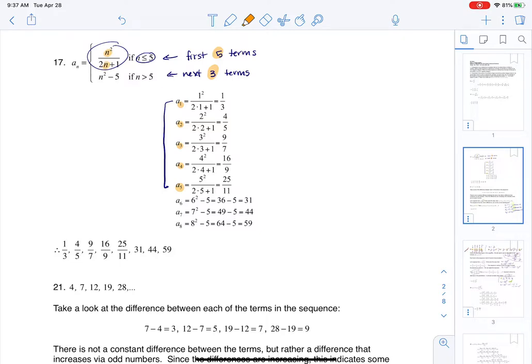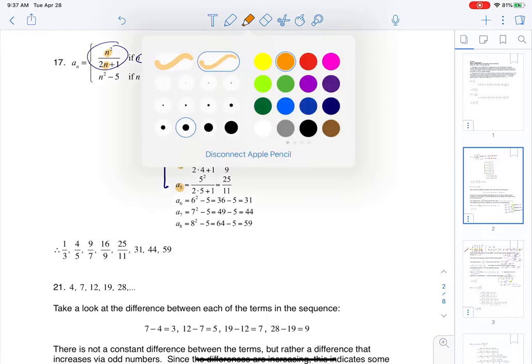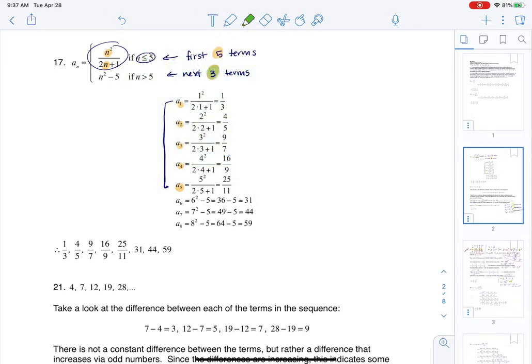When we move to the next three terms—let me use a different color here—specifically 6, 7, and 8, you see that I'm plugging n into this bottom piece for n² - 5 and computing those numbers. So the next three terms come from the bottom piece of that formula with n² - 5, and I'm computing those numbers with those various n values.